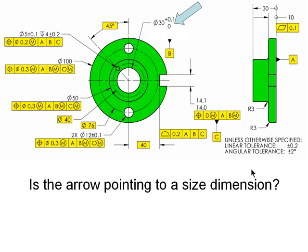The 30 is datum feature B, and this establishes the origin of measurement. So even though B is a feature of size, it does not require position, and its relationship to the primary datum feature would be perpendicularity.